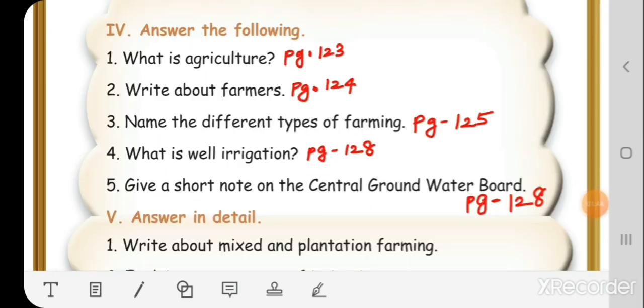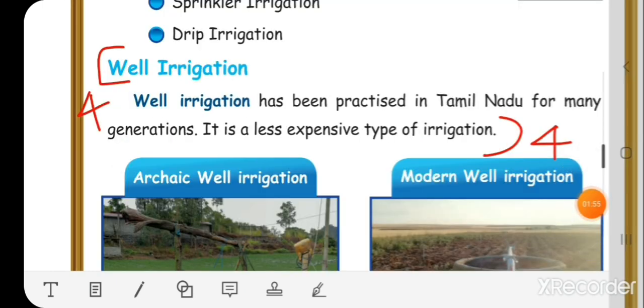Fourth question: What is well irrigation? This answer is on page number 128. Well irrigation has been practiced in Tamil Nadu for many generations. It is a less expensive type of irrigation.